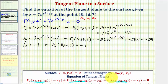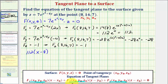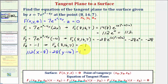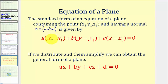For the equation of our tangent plane, the partial with respect to x at the point of tangency is 112, so we have 112 times (x - x₀), where x₀ is 8. Plus the partial with respect to y, which is negative 28, so minus 28 times (y - y₀), or (y - 16). Plus the partial with respect to z, which is negative one, times (z - z₀), or (z - 7), equals zero. This is the standard form of the equation of our tangent plane.